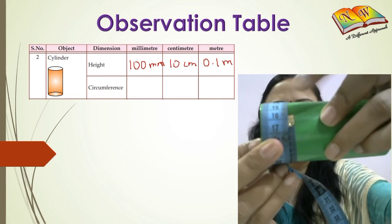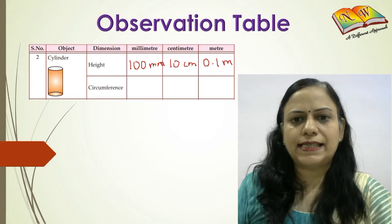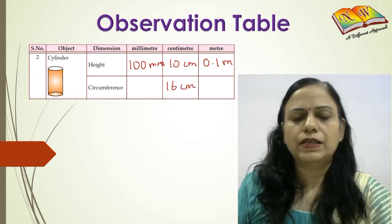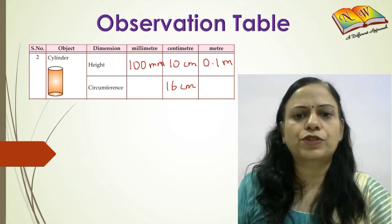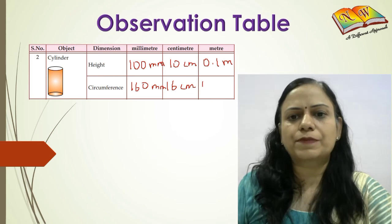So the circumference is 16 centimeters. What does 16 centimeters correspond to? 16 centimeters corresponds to 160 millimeters because we multiplied by 10, and it corresponds to 0.16 meters when we divide it by 100.